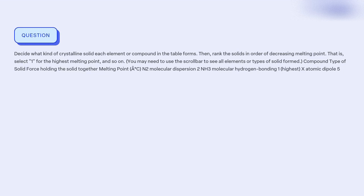Our objective is to determine the type of crystalline solid formed by each element or compound in the table, and rank them in order of decreasing melting point.